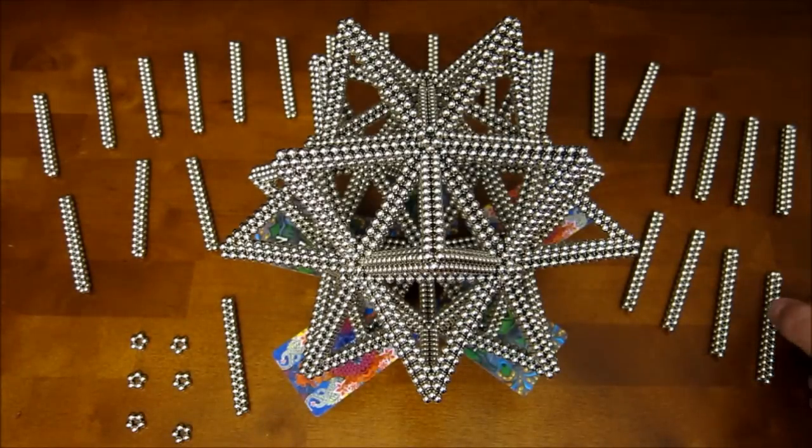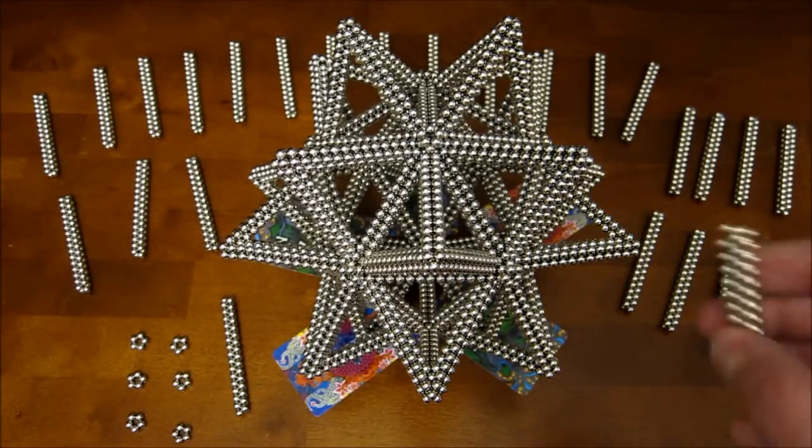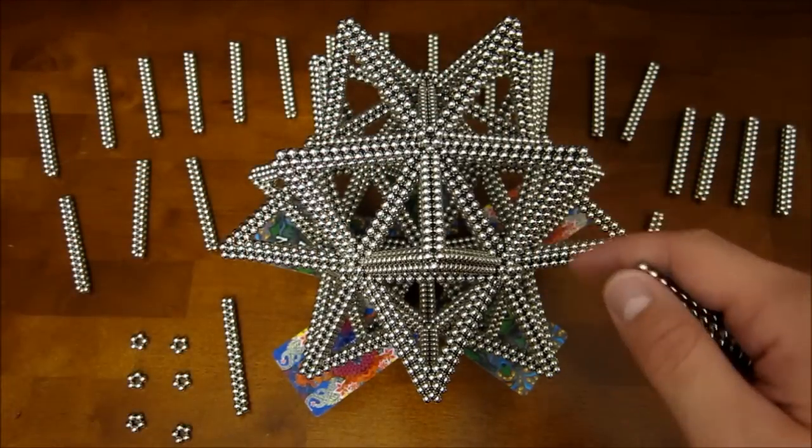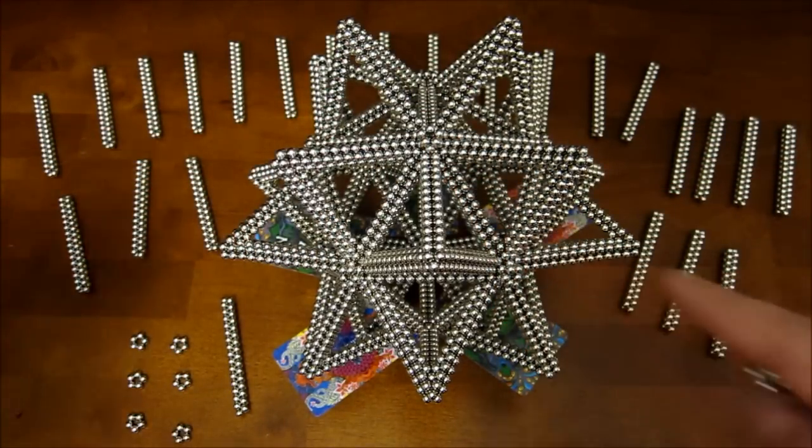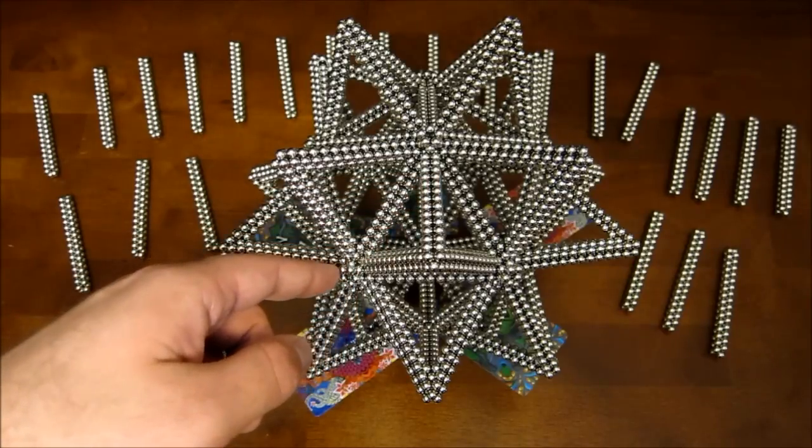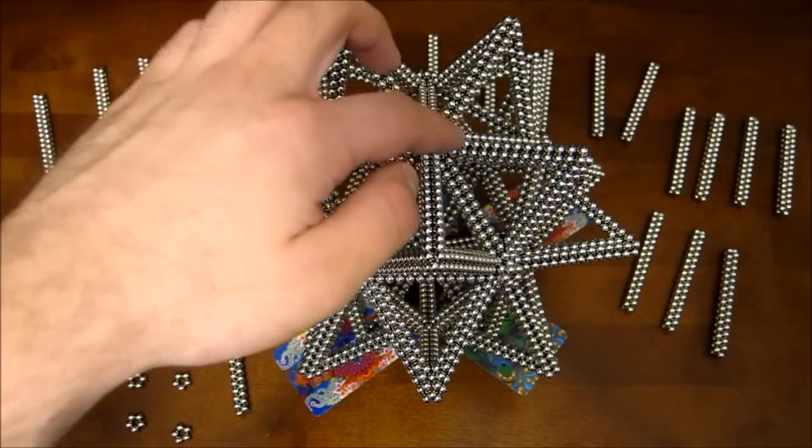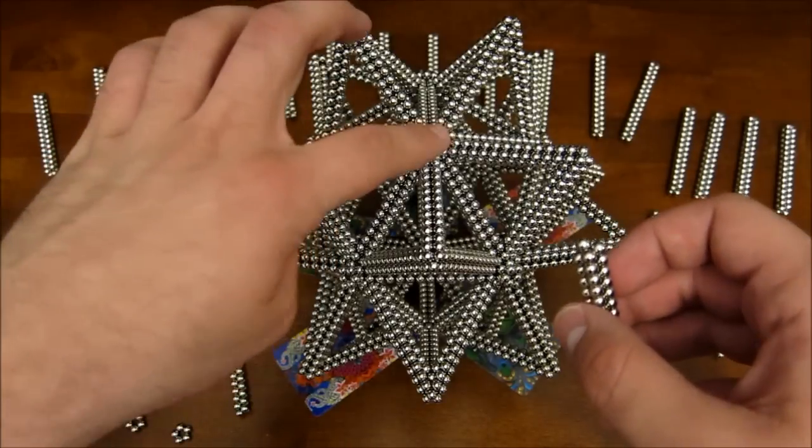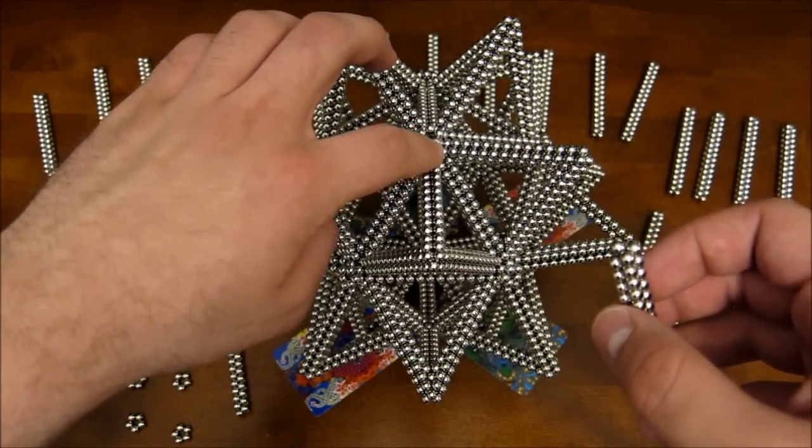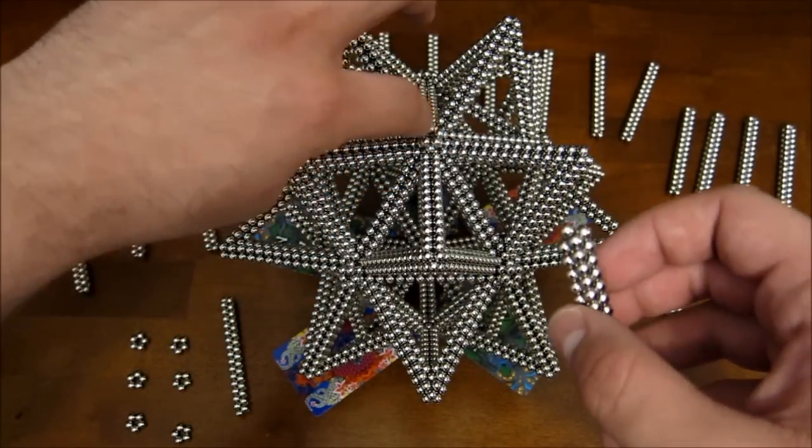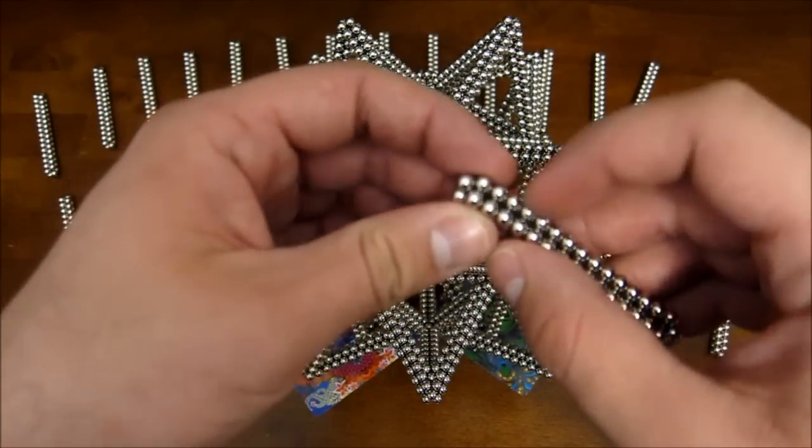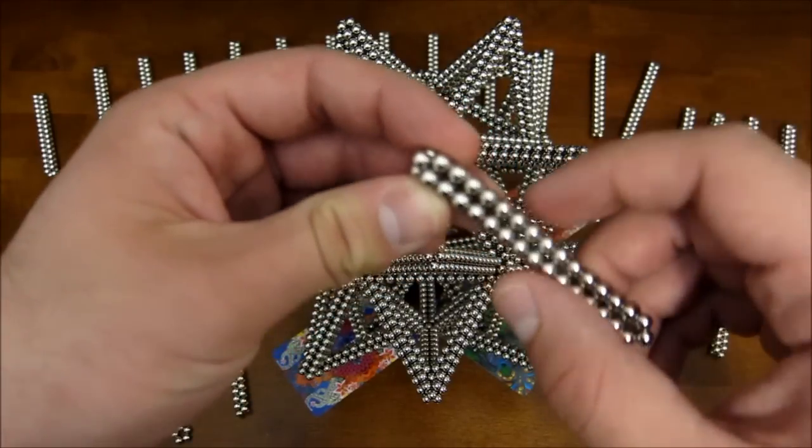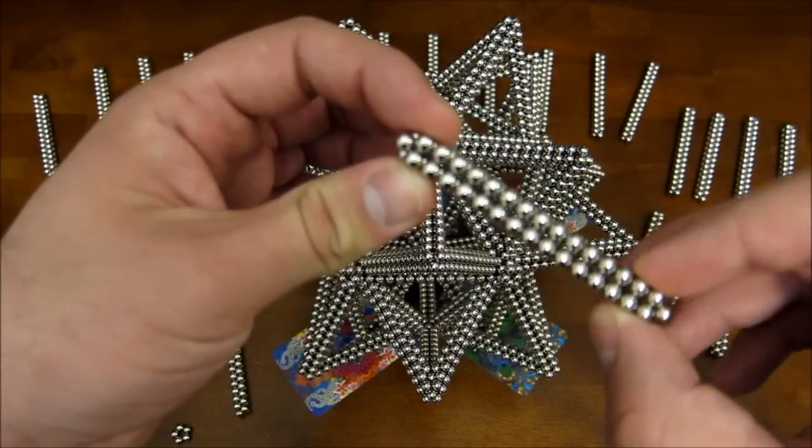But so the first thing that you're going to want to do is make an icosahedron around this thing, and it's going to follow the exact same pattern as the icosahedron that you built first. But because of these spacers, the two aren't going to touch. And you're going to want one of the balls, one of the magnets, in this pentagon, and the pentagon is going to fit right in between these three magnets at the end of this strut.